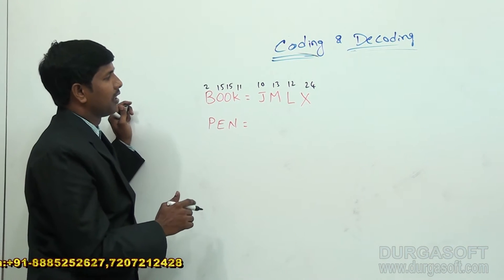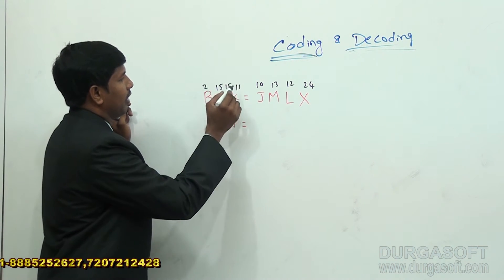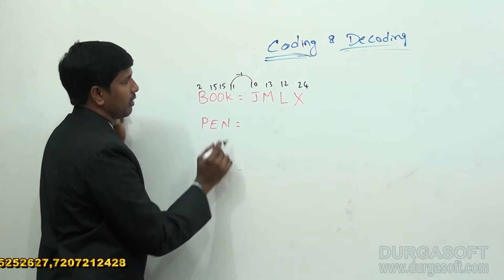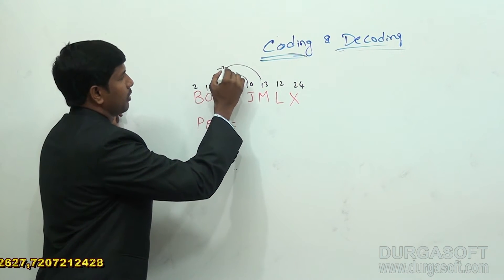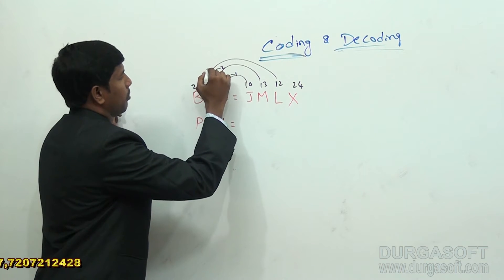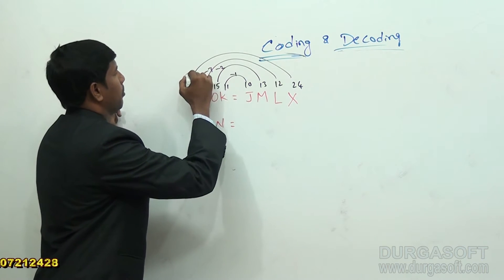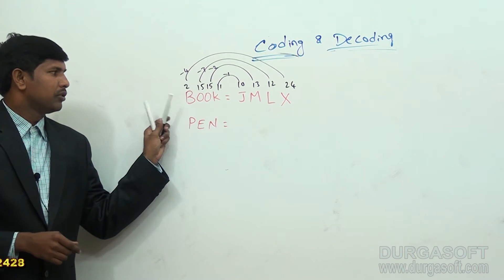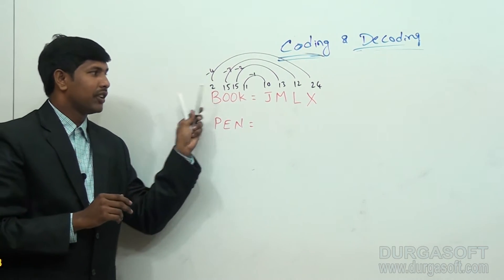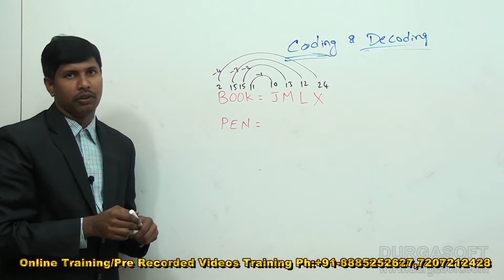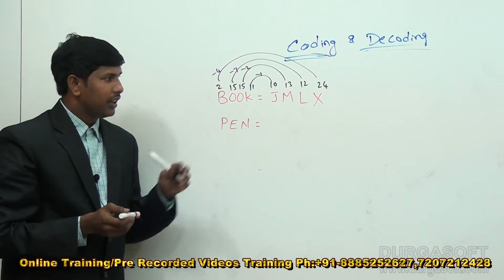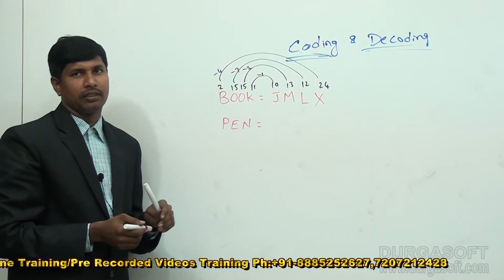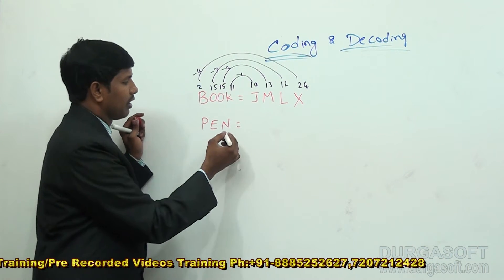Now, when you observe this, you will get the required logic. The pattern is minus 1, minus 2, minus 3, minus 4. Actually, B has value 2; if we take the other value, 28 minus 4 is 24. So in this way, we are subtracting but in reverse order — we are writing in reverse order.